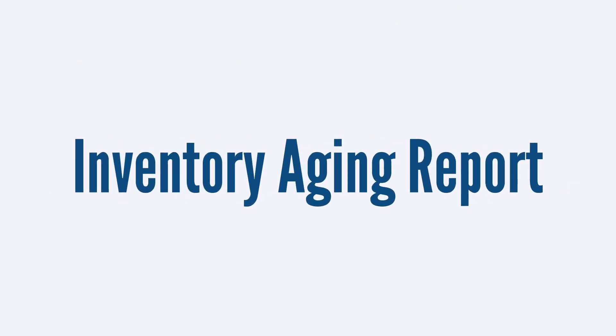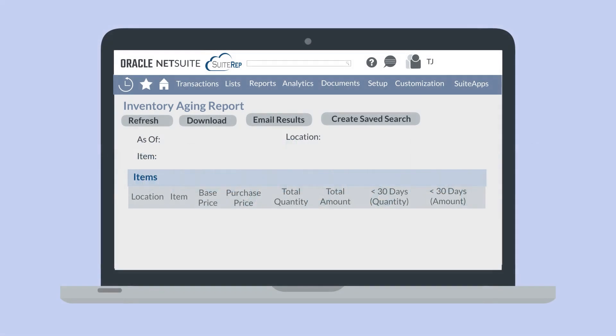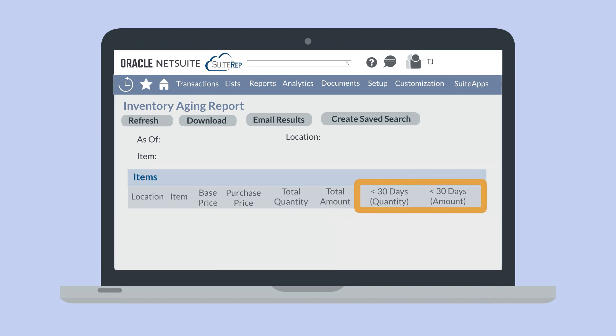Because of the immense value that this type of report provides, at SuiteRep we've created an inventory aging report that seamlessly integrates with any NetSuite account. Our report gives you the age of your inventory in customizable time periods. On the report, you'll be able to filter by location, as-of date, and item. The report displays all the items pulled up by your filters, showing the purchase price, day's price, total quantity for the item, and total financial value of the item. Then you'll see the breakdown of the quantities and amounts of those items that fall in each of the time buckets.